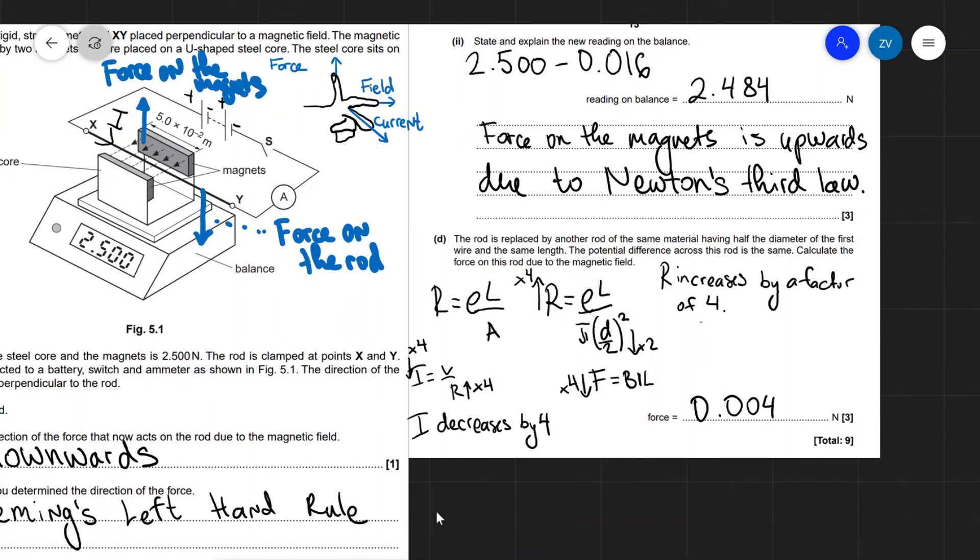Well, first off, due to the resistivity equation, if we were to reduce the diameter to half, because the area is given by π(d/2)^2, the resistance will do the opposite and will increase by a factor of 4 because it's d squared down here. So R increases by a factor of 4.